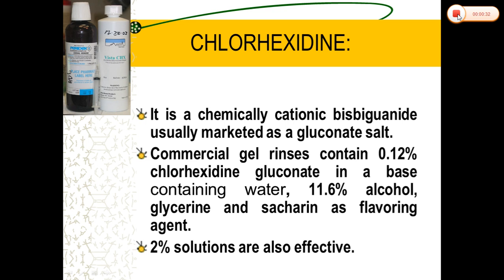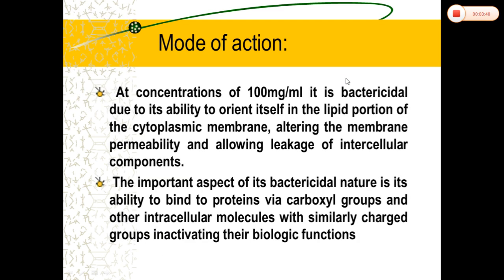It is a cationic bisbiguanide marketed as Gluconate. Its mechanism of action: it is a broad-spectrum antimicrobial agent, which is due to its cationic bisbiguanide molecular structure. The cationic molecule is absorbed to negatively charged phosphate groups of the microbial cell wall, which alters the cell's osmotic equilibrium and causes leakage of intracellular components.